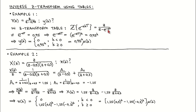We use the table entry for the Z-Transform of e to the power minus A K T, equal to Z divided by Z minus e to the power minus A T. This matches the given Z-Transform if e to the power minus A T equals 0.95. We rewrite e to the power minus A K T as e to the power minus A T, raised to the power K, which equals 0.95 to the power K for our example. Since the Z-Transform is one-sided, the corresponding time domain signal is 0 for negative time indices and 0.95 to the power K for non-negative indices, which can also be written as 0.95 to the power K times a unit step.